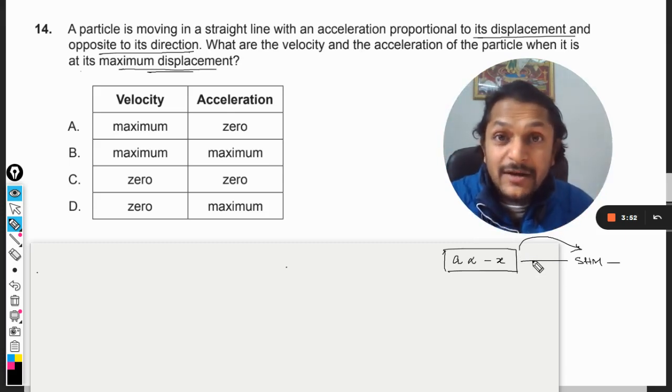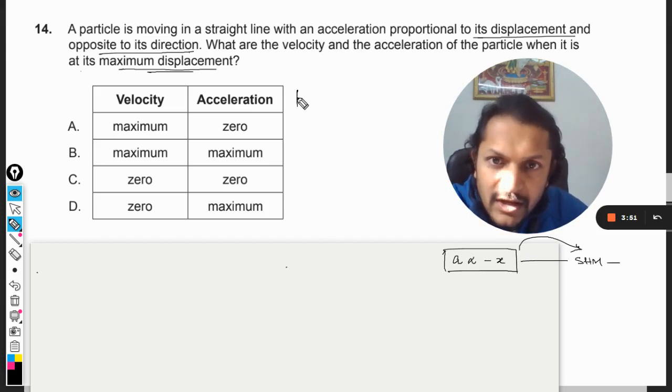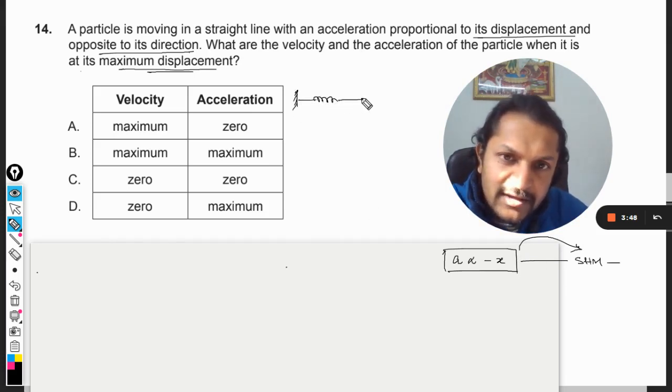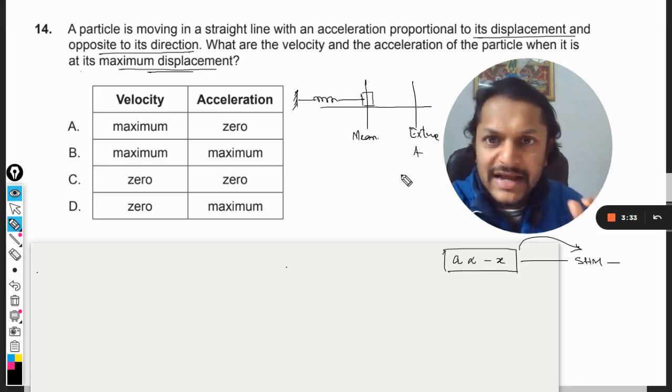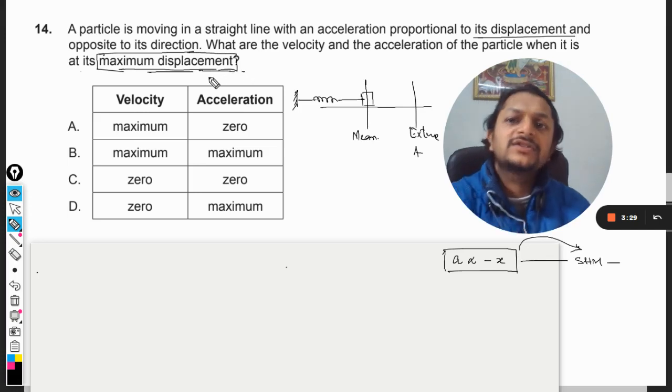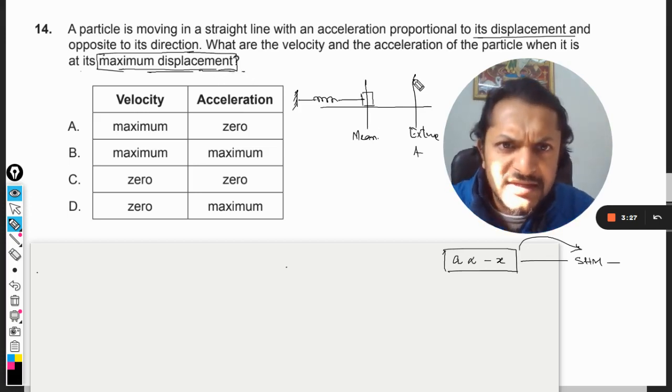Okay, so this is a spring. This is the mean position and this becomes the extreme position. And this is the mean. At the extreme position, obviously it is having the maximum displacement, that is the amplitude. And that is what they want to ask a question about. Maximum displacement means the body is at this location.